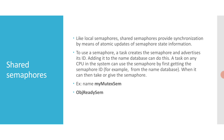Task T1 creates the shared semaphore and advertises the semaphore's ID by adding it to the database and assigning the name 'obj_ready_sem'. Task T2 looks up the name 'obj_ready_sem' in the database to get the semaphore's ID. It then takes the semaphore, waiting for the object to be ready for T2. When T1 is ready to transfer control of the object to T2, it gives the semaphore, readying T2 on CPU 1.